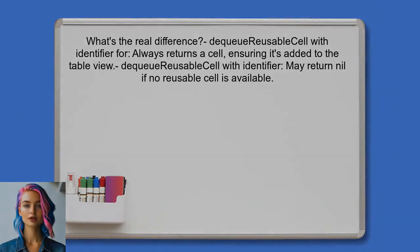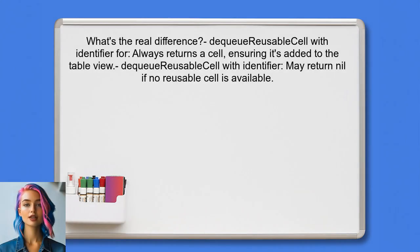So what's the real difference? The method DQ Reusable Cell with Identifier for is designed to always return a cell, ensuring that it is properly dequeued and added to the table view. On the other hand, DQ Reusable Cell with Identifier may return nil if no reusable cell is available, which can lead to unexpected behavior if not handled correctly.